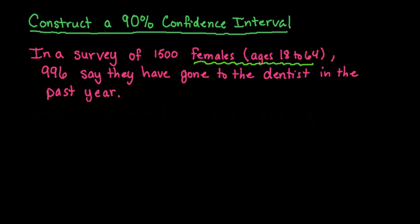When you are dealing with a proportion or a part or a percentage of the population that you're trying to come to a conclusion about, you are going to use what is called the one proportion z-interval.